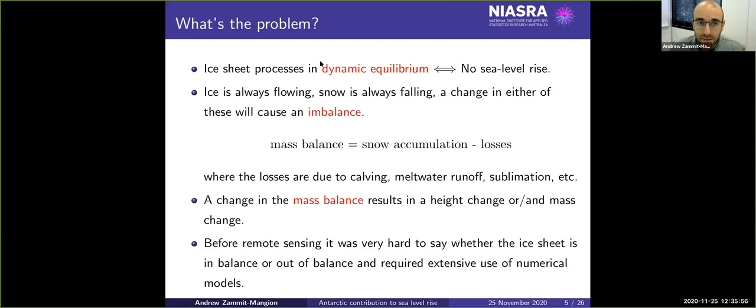So some basics. Ice sheet processes, if they are in dynamic equilibrium, essentially what that means is that if precipitation equals ice discharge in the simplest of terms, then there's no sea level rise. So we are really concerned about imbalance, and an imbalance happens when snow accumulation exceeds or is less than the amount of loss. Where losses could be due to calving, meltwater runoff, sublimation and other lossy processes.